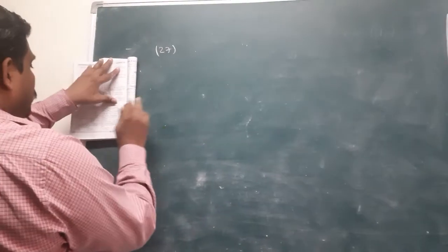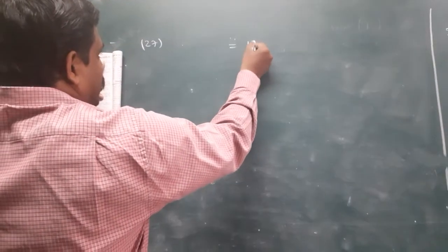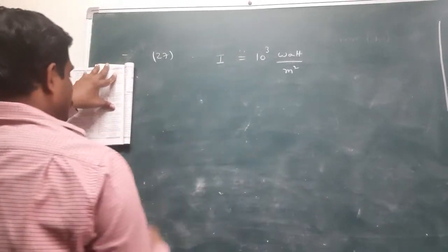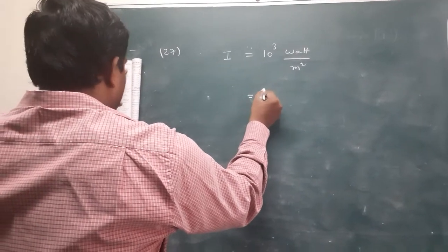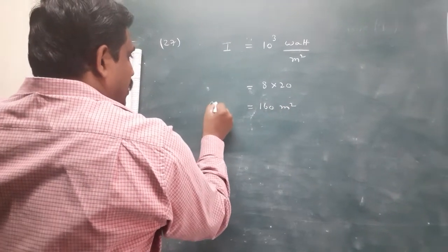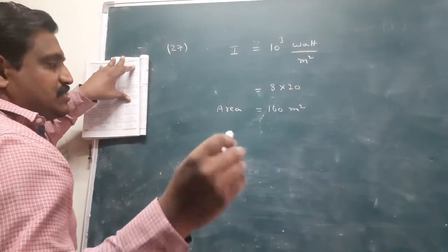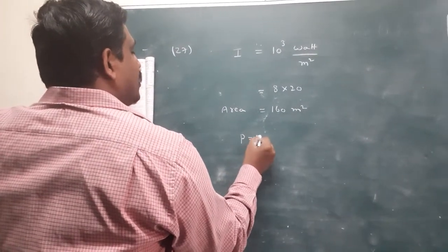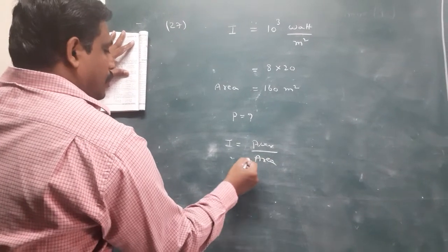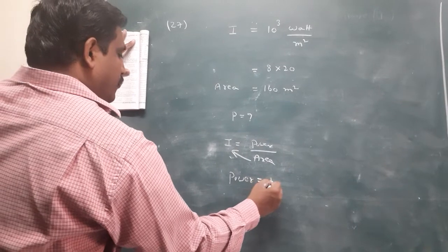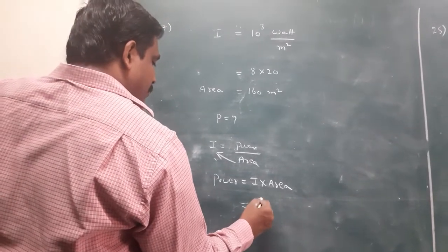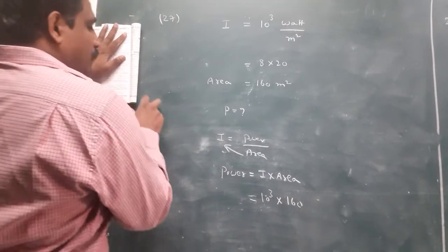Problem number 37: Intensity is given as 10³ W/m², and dimensions are 8 × 20 = 160 m² (area). The question asks for power. Using the formula: power equals intensity into area = 10³ × 160. We calculate and get the final answer.